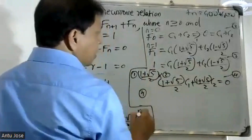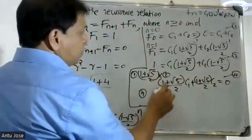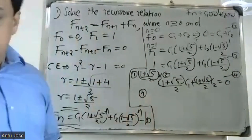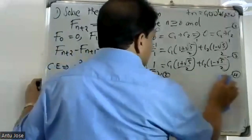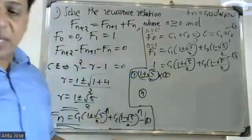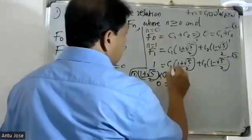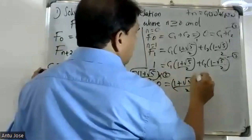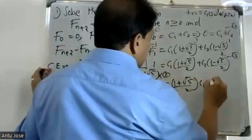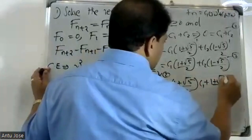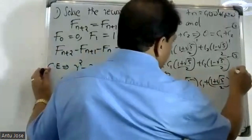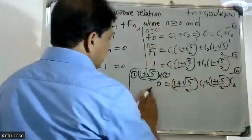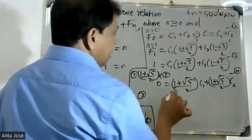Now from equation 3 and equation 4, the left hand side is zero. Substituting one plus root five by two into equation 4, and working through equations 3 and 4 together to solve for the constants.